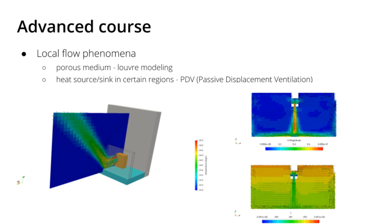For local flow phenomena, we'll talk about porous media. For example, on the left-hand side, you can see how a louver can deflect the flow of an ACU, and on the right-hand side, you can see a heat source and sink of passive displacement ventilation, where at the top cold water is cooling down the air, this cold air falls down to the floor, cooling the entire room. We will show you how you can define these regions, for example in this case as a heat sink.